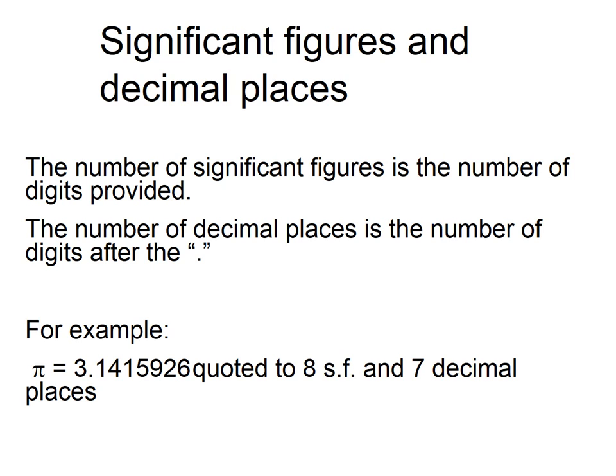This is just a kind of trivial example. Pi is an irrational number. It has an infinite number of decimal places or significant figures. So the difference between significant figures and decimal places is that significant figures is the total number of numbers, including those before the decimal place, and decimal places is just those after the decimal place.